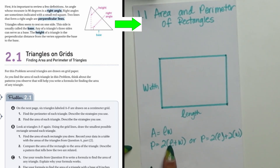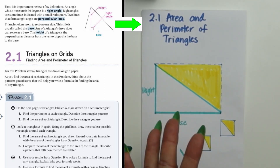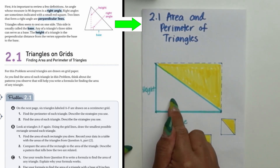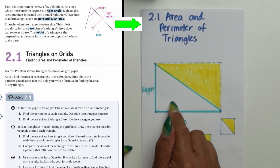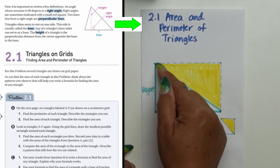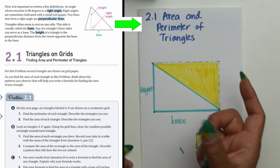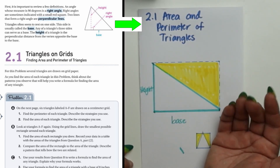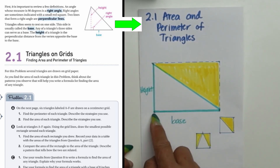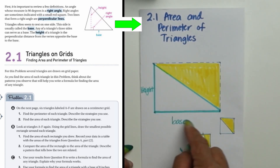Now we're moving on to the triangle. Something important to know is that a triangle has three sides and its area is half the area of a rectangle. Here's an example: if you take a rectangle and cut it in half diagonally, you get two equal triangles. Using the area formula — width times length divided by two — you can find the area of one triangle.